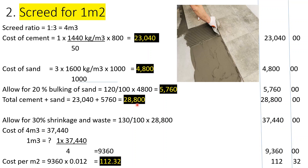Total cement plus sand: 23,040 + 5,760 = 28,800. Allowing for 30% shrinkage and waste gives 37,440 — this is the cost for 4 m³. Cost per m³: 37,440 ÷ 4 = 9,360. Cost per m² of screed: 9,360 × 0.012 (the 12 mm thickness) = 112.32.